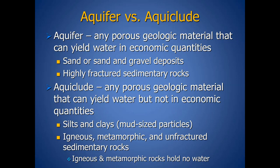Aquacludes — materials that can't yield economic quantities — are usually composed of smaller particles like silts and clays, or mud-sized particles. Smaller particles mean fewer pore spaces and less water held. Igneous, metamorphic, and unfractured sedimentary rocks are generally considered aquacludes. An igneous rock forms from the cooling and crystallization of magma, and as magma cools it has essentially zero empty space — so it holds zero water, which is clearly not economic quantities.